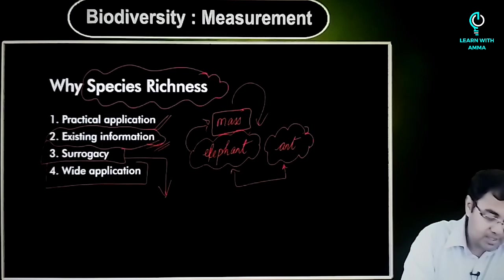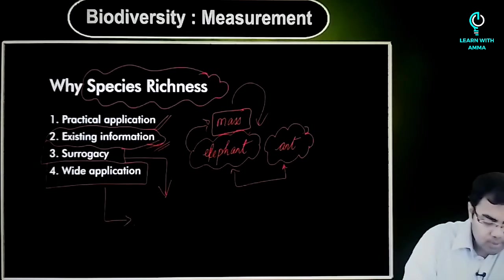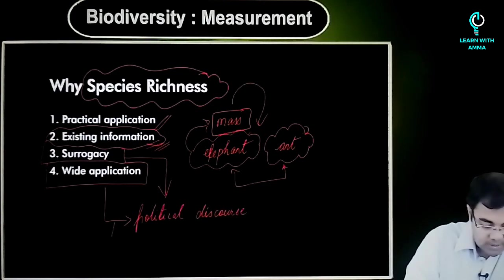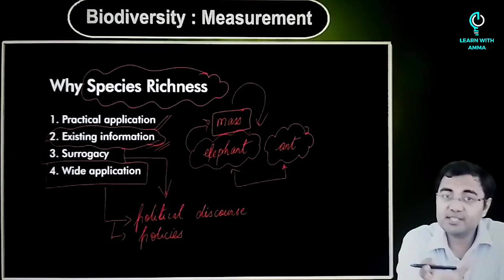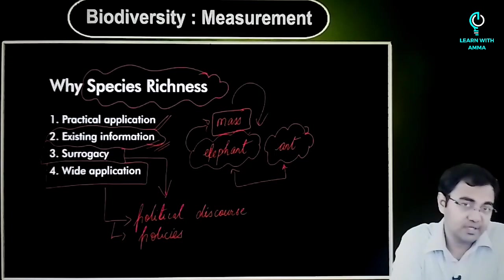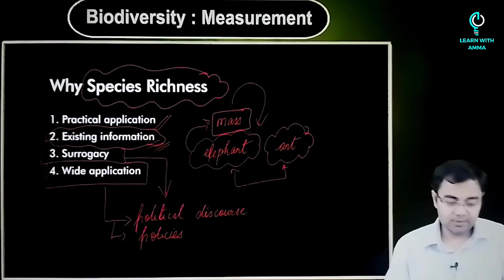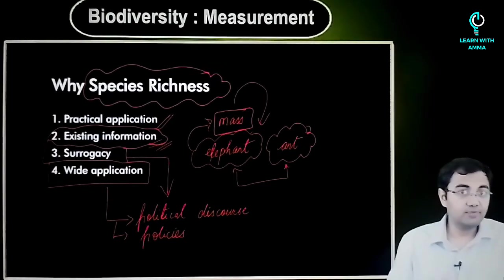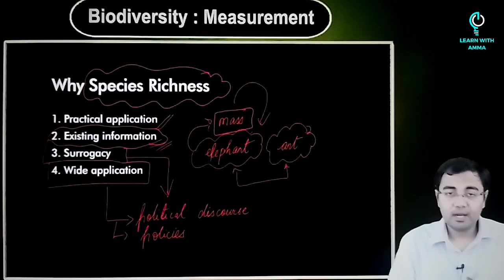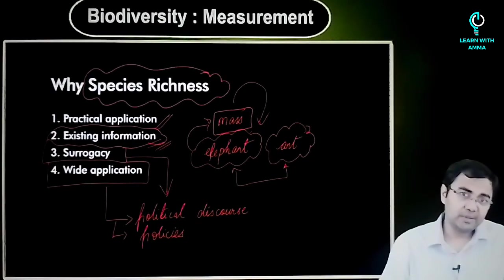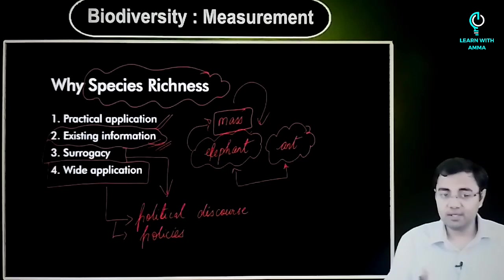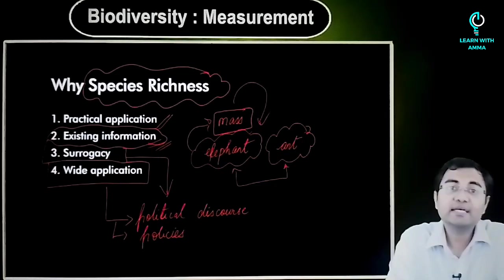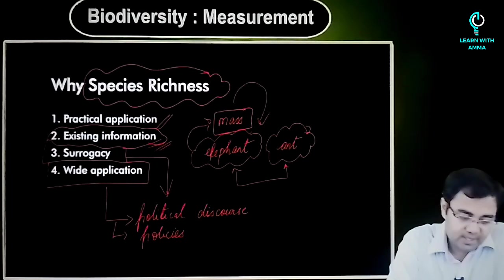Then there is wide application. When talking about political discourse or policies that a government would take, all these will also be easier if they are based on numbers, based on species richness from the alpha, beta, and gamma diversity numbers we discussed. From all these perspectives, we see that species richness becomes a very important way in which measurement can be done. Qualitative measurements are not very feasible practically looking at all these areas.